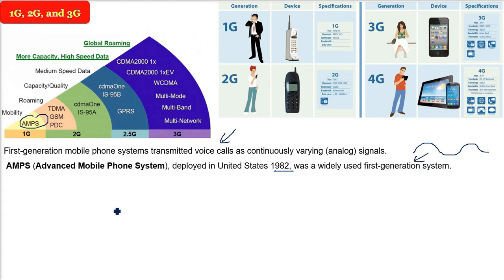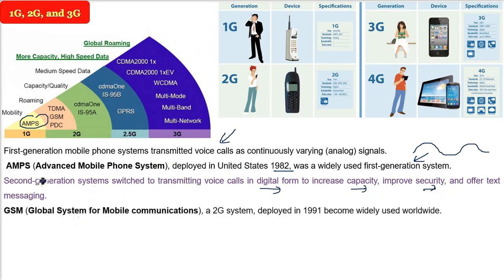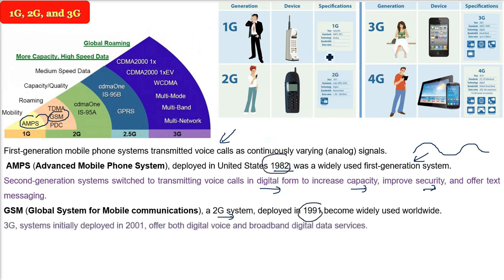Second generation (2G) switched to transmitting voice calls in digital form, to increase capacity, improve security, and offer text messaging. GSM — Global System for Mobile Communication — is a 2G system, deployed in 1991. So 1G came in 1982, 2G in 1991.